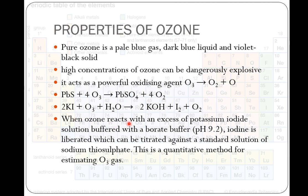When ozone reacts with an excess of potassium iodide solution, like here, buffered with a borate buffer, iodine is liberated. You can see here, iodine is liberated, which can be titrated against a standard solution of sodium thiosulfate. This is a quantitative method for the estimation of ozone.